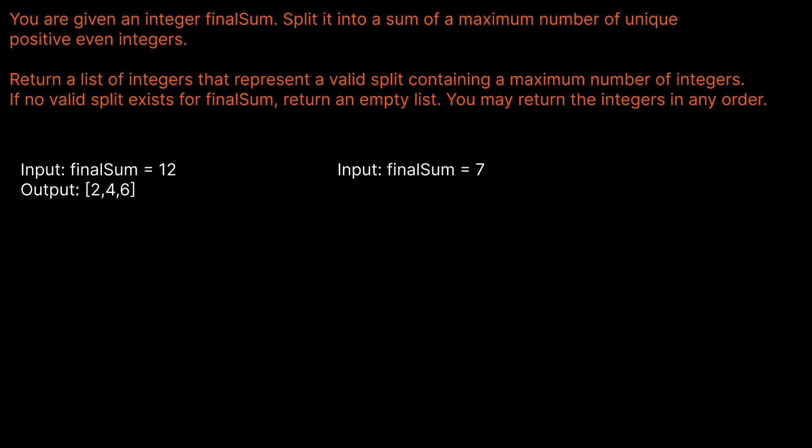Welcome back to the Cracking Fan YouTube channel. Today we're going to be solving LeetCode problem 2178: Maximum Split of Positive Even Integers. You are given an integer final sum — split it into a sum of a maximum number of unique positive integers. Return a list of integers that represent a valid split containing a maximum number of integers. If no valid split exists for final sum, you may return an empty list, and return the integers in any order.